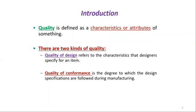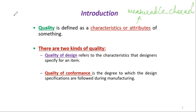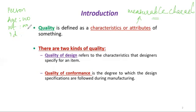There are a few terms we need to know. Quality is defined as a characteristic or attribute of something. An attribute is a measurable characteristic. For example, for a specific person, their age is a measurable characteristic — a number. Their weight, identification number, or house number are also attributes — measurable characteristics.